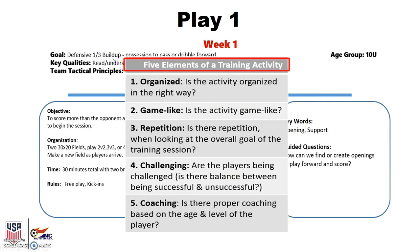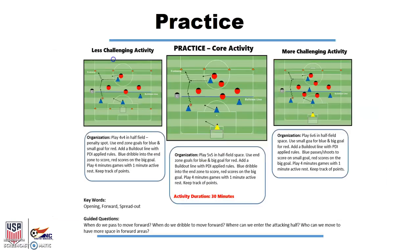The five elements of a training session are going to help us evaluate our entire plan. We're going to look at the organization of the training session, the game-like activities, and the ways in which they challenge our players. We assess the repetition of activities and how it relates to the overall goal. We also look at how balanced the challenge is — are the players being successful or unsuccessful? And as a coach, we review how we are implementing the coaches' toolkit based on the age and ability level of the players.